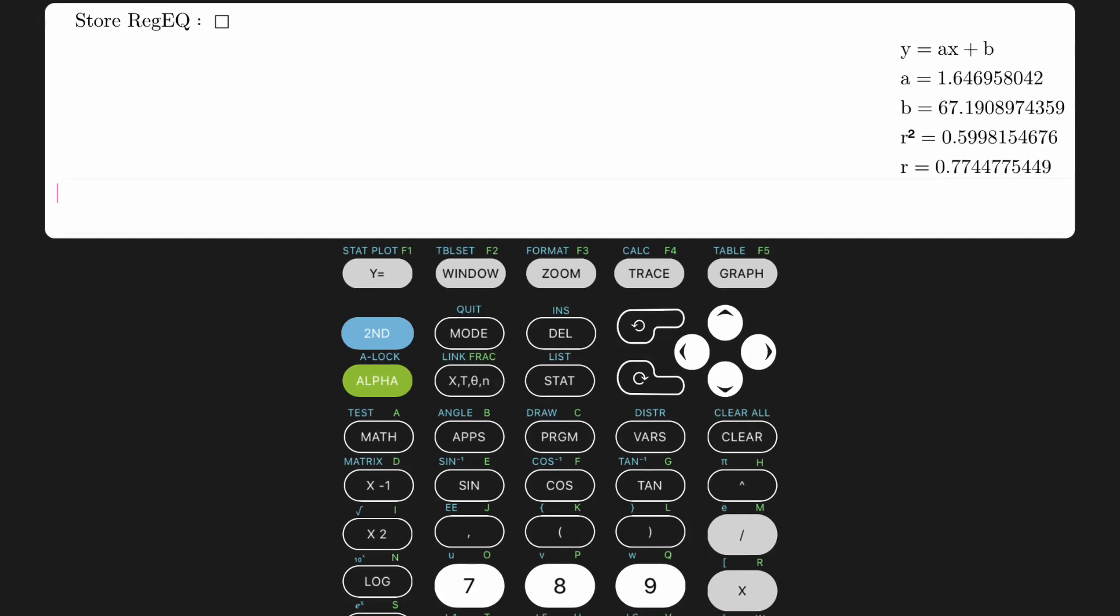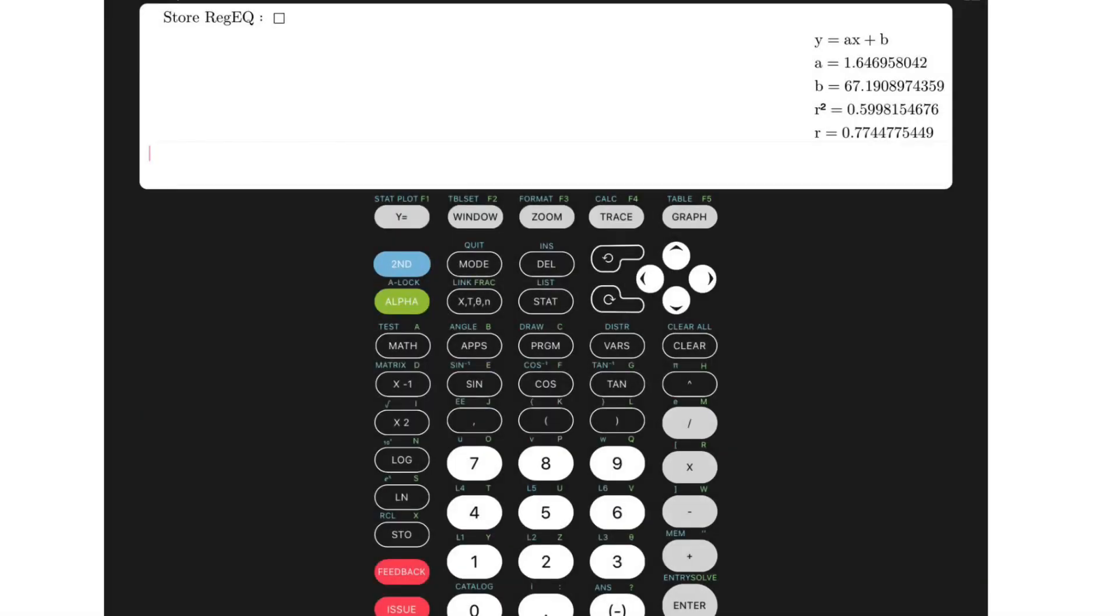Here, we can answer question B, as our A value is our slope at 1.65, and the B value is our Y-intercept at 67.19. Our R-squared value is about .6.